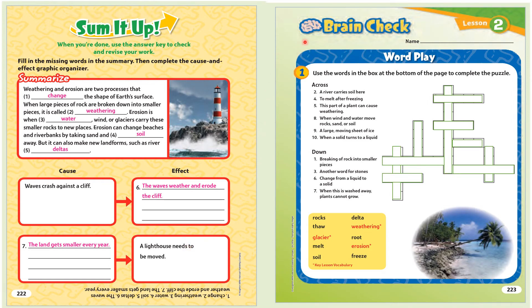Lesson 2 Brain Check. Wordplay. Use the words in the box at the bottom of the page to complete the puzzle. Across: 2. A river carries soil here. 4. To melt after freezing. 5. This part of a plant can cause weathering. 8. When wind and water move rocks, sand, or soil. 9. A large moving sheet of ice. 10. When a solid turns to a liquid. Down: 1. Breaking of rock into smaller pieces. 3. Another word for stones. 6. Change from a liquid to a solid. 7. When this is washed away, plants cannot grow.